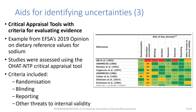More formal approaches, such as EFSA's critical appraisal tools, provide defined criteria which both identify and qualitatively evaluate sources of uncertainty affecting the evidence used in assessment. Here's an example from EFSA's 2019 opinion on setting dietary reference values for sodium, where they use color coding to show the rating of different studies using the OHAT NTP critical appraisal tool. The criteria they used included randomization, blinding, reporting, and other threats to internal validity. When using tools of this type, you need to look out for additional uncertainties they don't cover — in this case, uncertainties about the assessment methods.